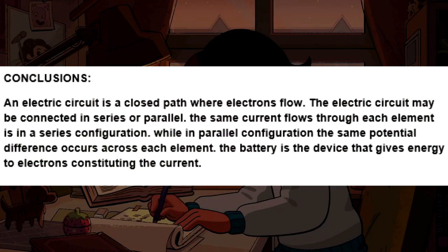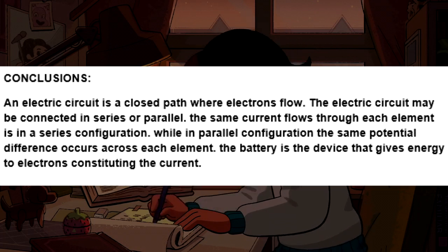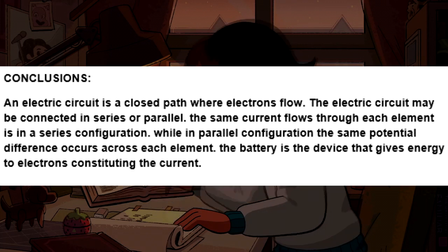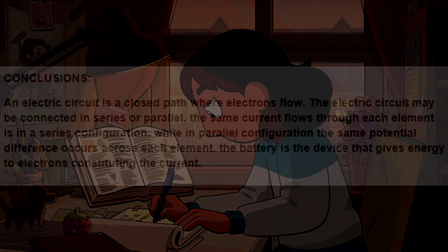Conclusion. An electric circuit is a closed path where electrons flow. The electric circuit may be connected in series or parallel. The same current flows through each element in a series configuration, while in parallel configuration the same potential difference occurs across each element. The battery is the device that gives energy to electrons constituting the current.